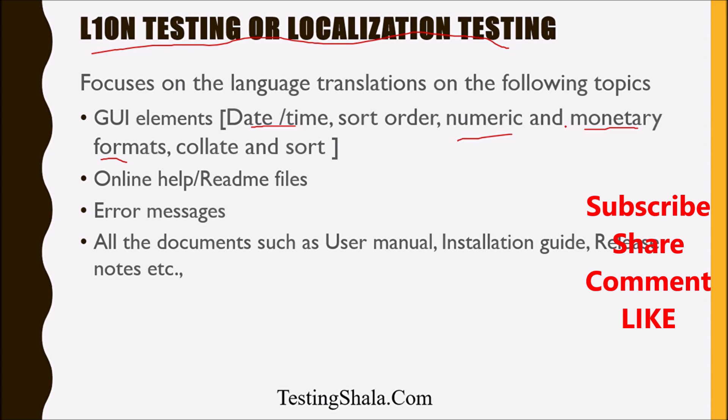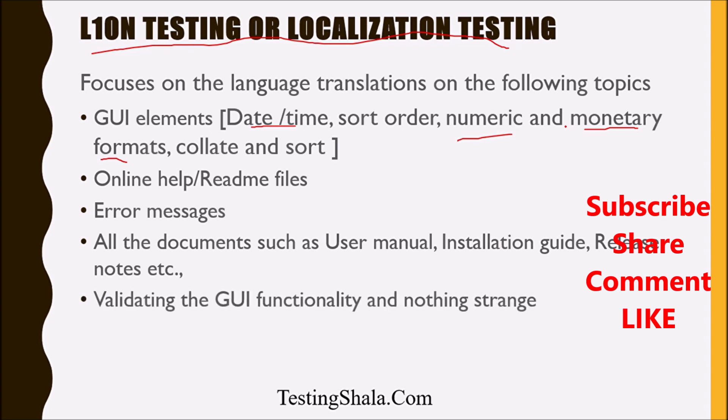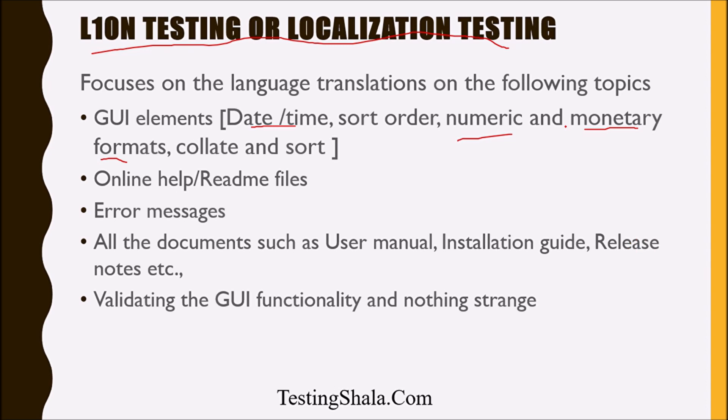The fourth important thing to validate is all documents, such as the user manual, installation guide, release notes, and any other documents provided to the client or customers. Whenever a user opens the application in Chinese or Japanese, the appropriate documents should also be translated into their own language, or they should be able to receive the appropriate language documents. That is the third — rather, the fourth — thing we validate as part of localization testing.